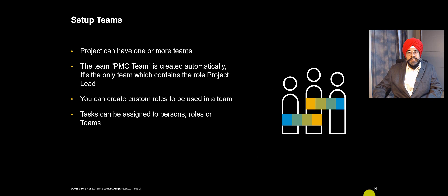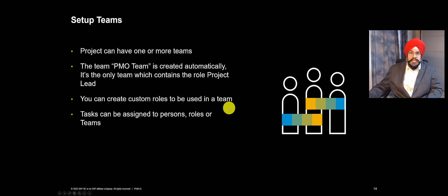You can also set up teams. One team called the PMO team is created by default but you can add more teams if you want. Teams constitute of roles and you can have person assignment to these roles. The standard role list is coming from SAP Activate methodology but if you find it insufficient you can easily extend the definition by adding custom roles. The important point to note is task assignments — tasks can be assigned to persons, roles, or teams very easily, and that can also be changed later.